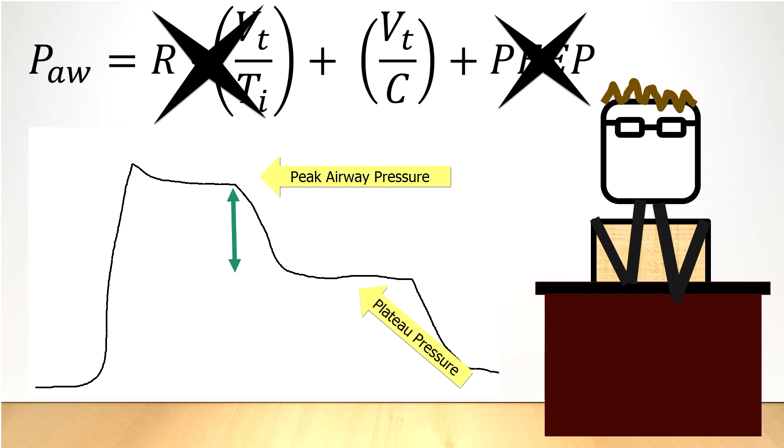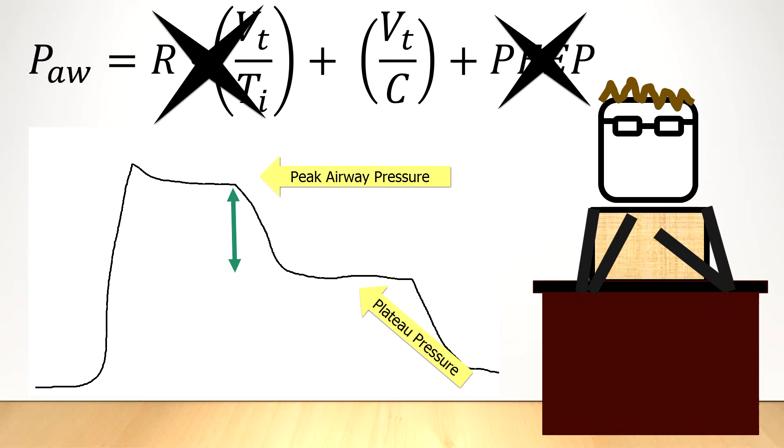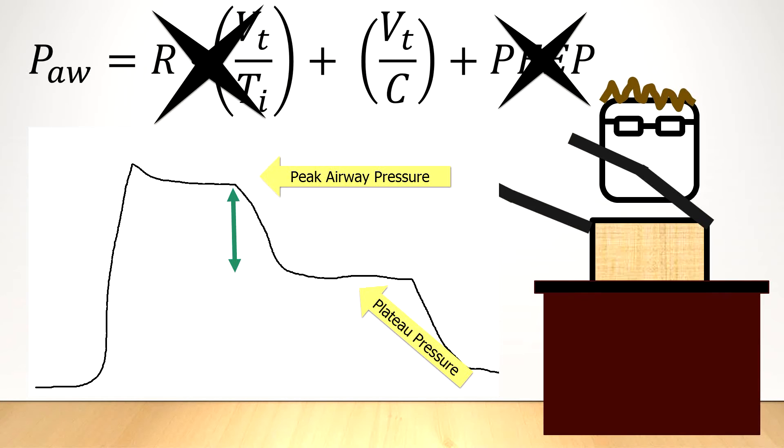But if the peak airway pressure goes up and so does the plateau pressure, then the increased pressure is due to something going on in the lungs. Now this can be either because the lung compliance has gone down or a higher tidal volume is being delivered than what could have been previously tolerated.